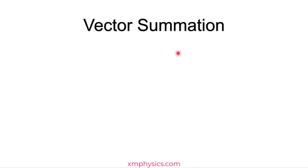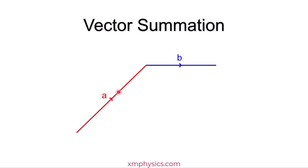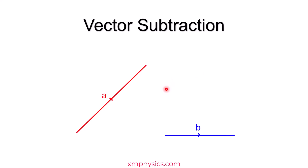In the previous video, I've already shown you how to do vector summation. So if you have vector A and vector B, and you want to do A plus B, just join them up — and that gives you A plus B.